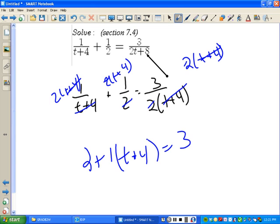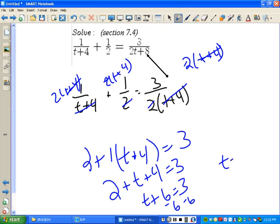Now, 2 plus T plus 4 is equal to 3. So, this is T plus 6 is equal to 3. Subtract 6, and you'll get T equals negative 3. I'm reminding you that when you get to negative 3, you need to go back and plug that in. Negative 3 plus 4 is 1. It is not 0, so negative 3 is fine. I'll always go back and double check, though.